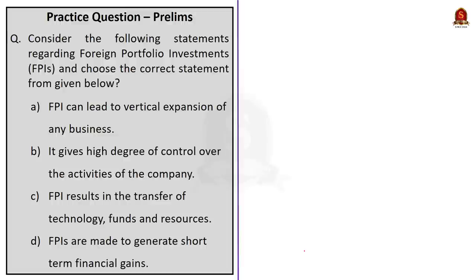The first practice question is about FPI. Consider the following statements regarding FPI and choose the correct statement. Option A: FPI can lead to vertical expansion of any business. Option B: It gives a high degree of control over the activities of the company. Option C: FPI results in the transfer of technology, funds and resources. Option D: FPI are made to generate short-term financial gains. The correct answer is option D. The first three options are characteristics of FDI, while the fourth is the characteristic of FPI.